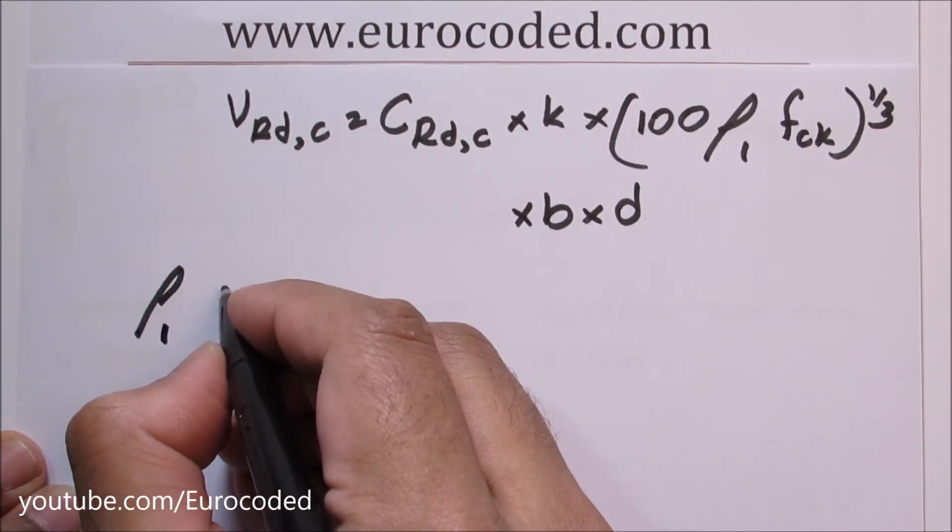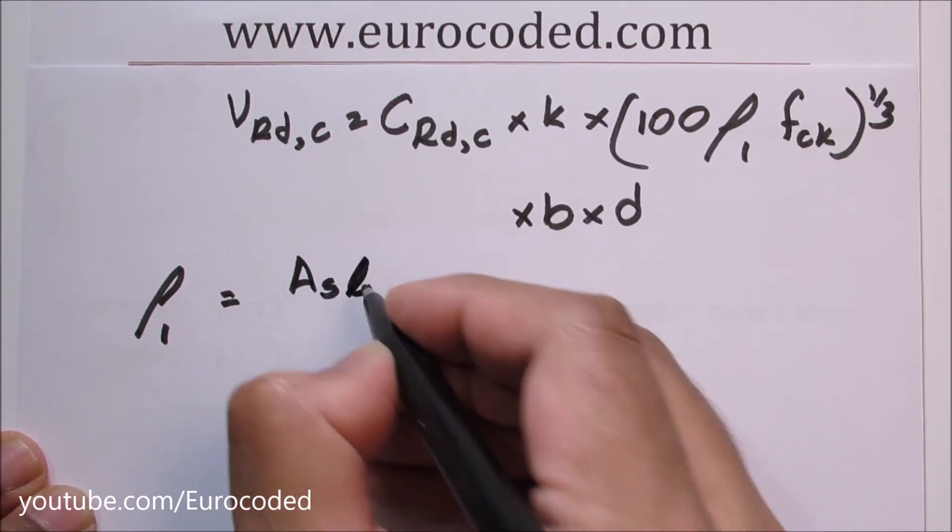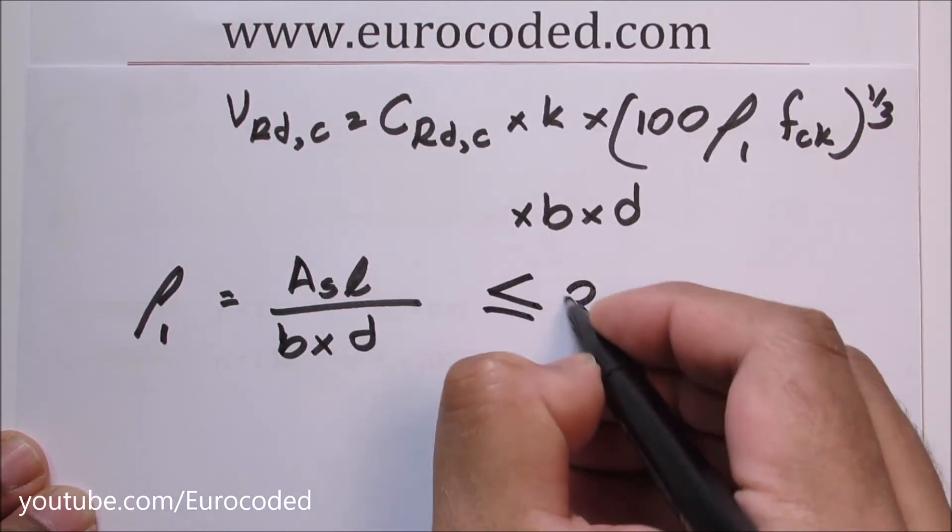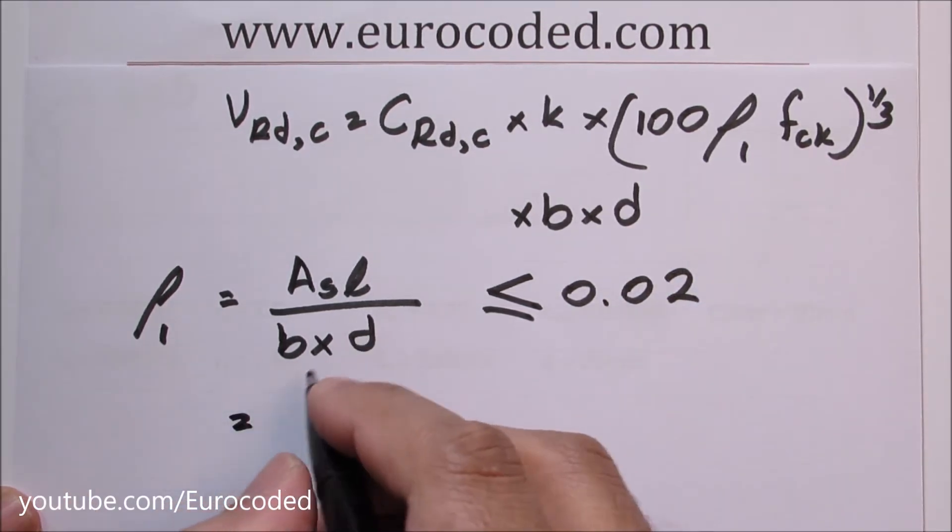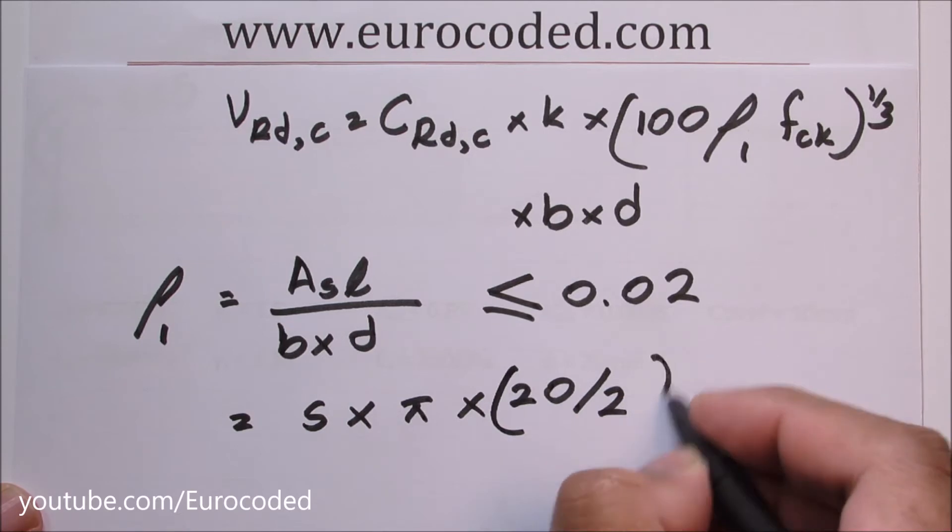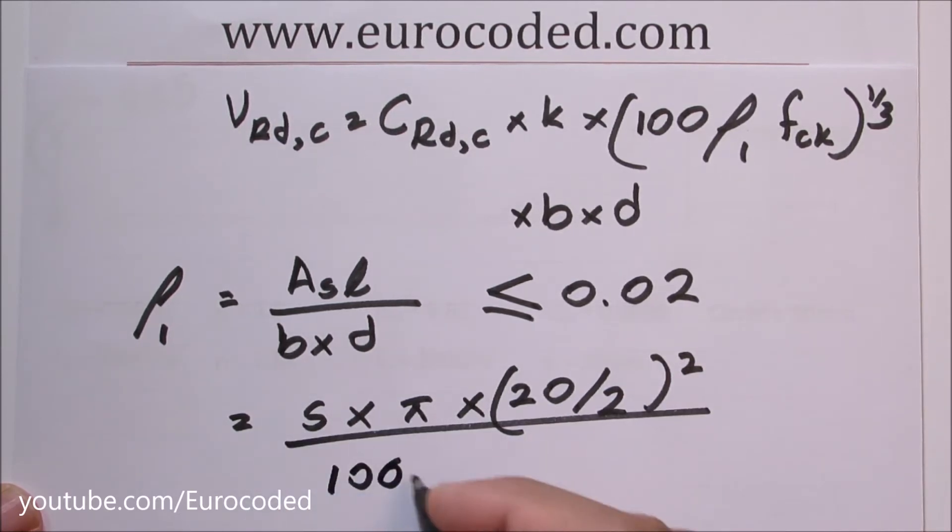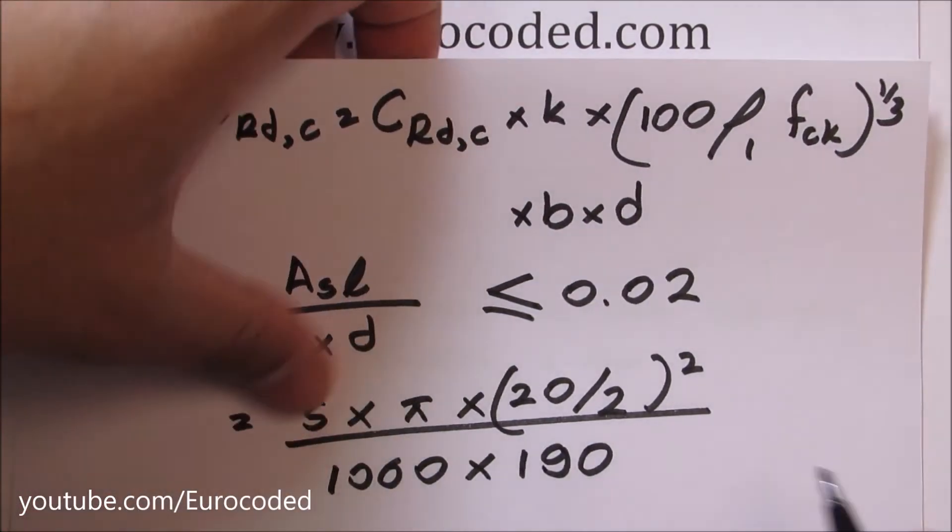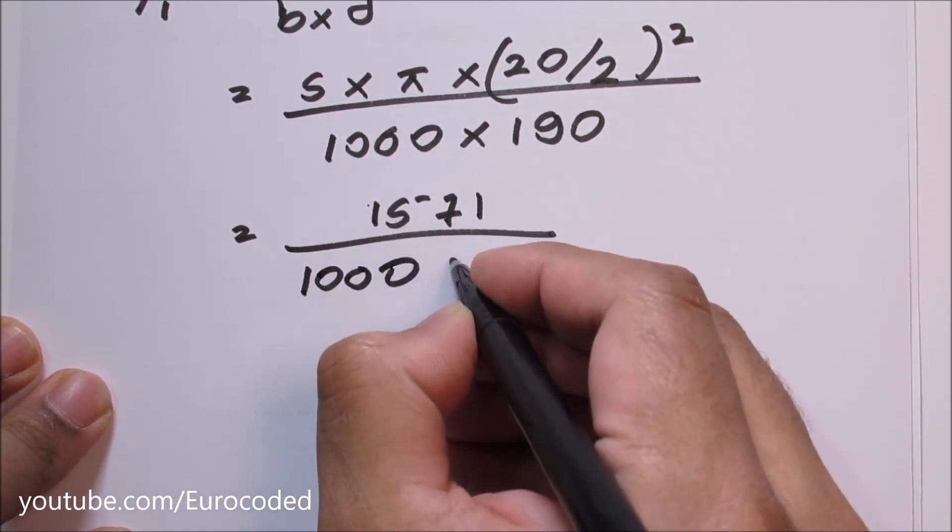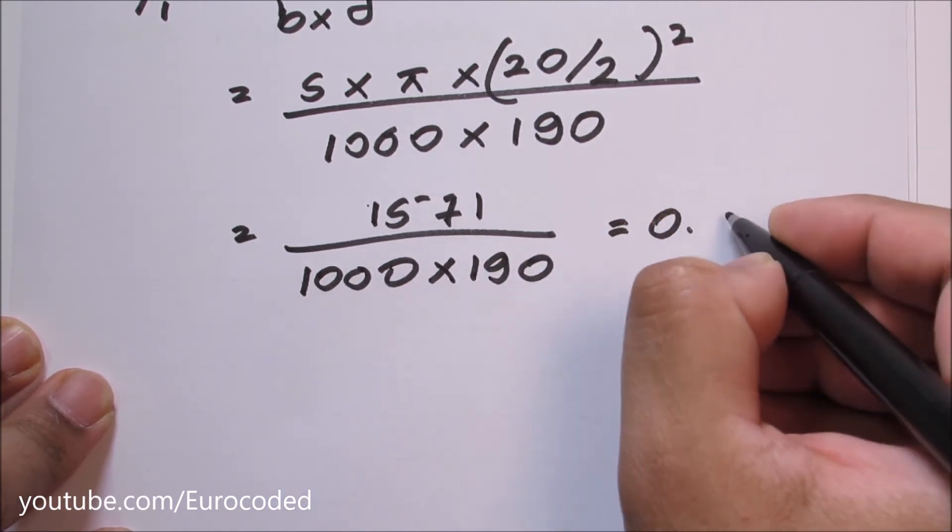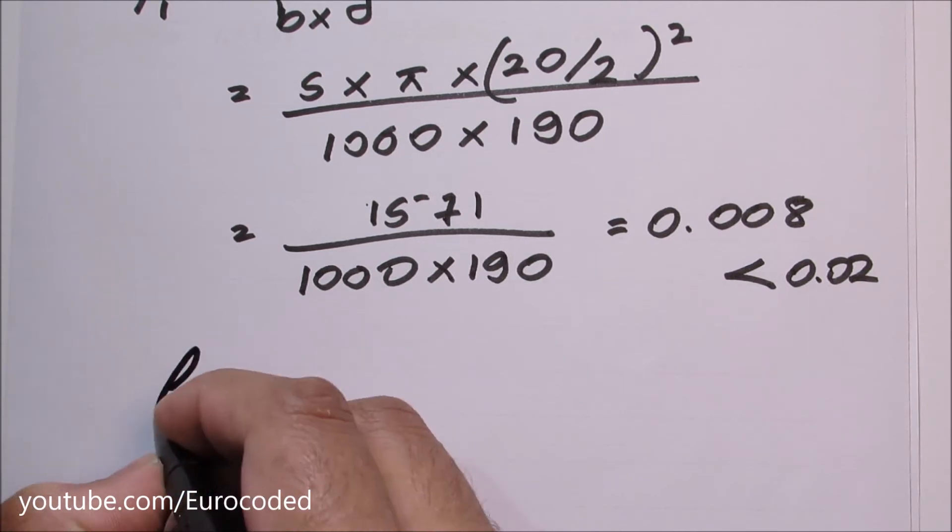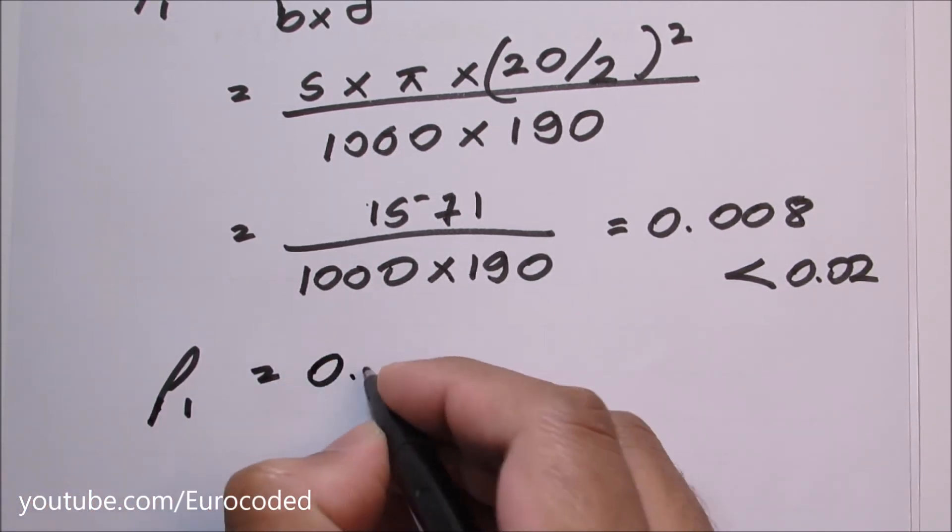Let's calculate rho_l which can be written as area of the longitudinal reinforcement over b times d and this value has to be less than or equal to 0.02. This is equal to number of bars is 5 times pi times bar diameter is 20 over 2 squared over 1000 times 190. This comes to 1571 over 1000 times 190. This is equal to 0.008 and that is less than 0.02. Hence we can write our rho_l is equal to 0.008.